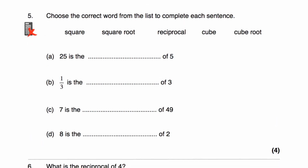Question 5 asks us to write the correct word from the list — square, square root, reciprocal, cube, or cube root — to complete each sentence. Part A: 25 is the something of 5. Well, 5 squared is 25, so 25 is the square of 5. Part B: a third is the something of 3. It's not the square (that's 9), not the square root (that's 1-point-something), not the cube (3 cubed is 27), so it's going to be the reciprocal of 3.